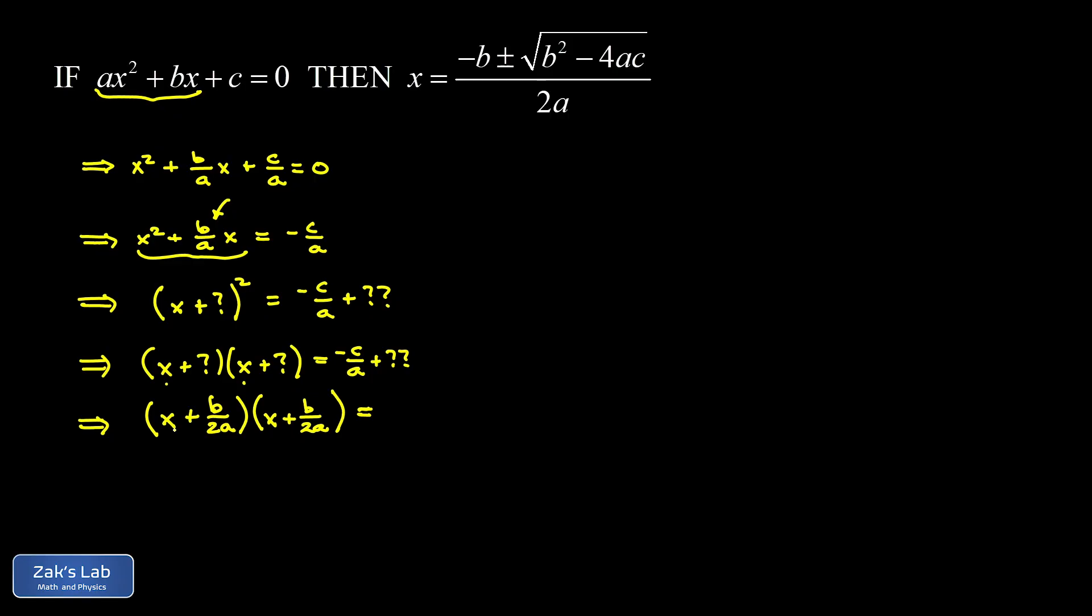So now look what happens when we square this binomial. I get x squared. I get x times b over 2a and another x times b over 2a, which gives me b over a times x. And now I can see what the side effect is of wrapping up all my variable pieces in a squared binomial. There's a constant b over 2a multiplied by another b over 2a. And that gives me b squared over 4a squared. So by writing the left-hand side in this form, I've implicitly added b squared over 4a squared to the left-hand side. And that means I have to do the same thing to the right-hand side.